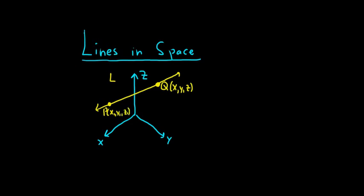Okay, so Q is just an arbitrary point on the line, and then P will be like some fixed point. So to find a line in space, you need two things. You need a point on the line, which we have, which is P. And you need a parallel vector.